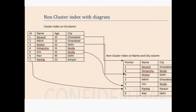Suppose we have an employee table with columns like ID, name, age, and city. We already have a clustered index on the ID column. So what happens behind the scene is that the data is saved and sorted based on ID — the data is already saved and sorted on the basis of ID. Now I am going to create a non-clustered index on the name and city columns.